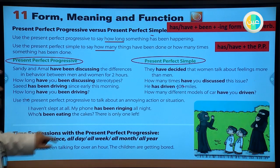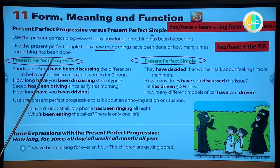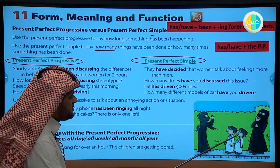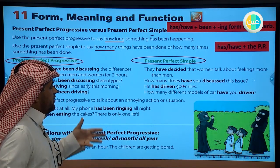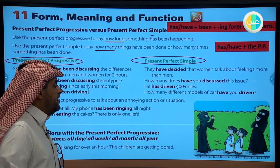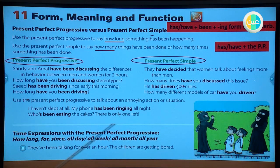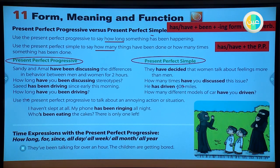Use the present perfect progressive to talk about an annoying action or situation. For example, two women are talking and the boys are bored because the women talked for a long time. We describe this by saying: 'They have been talking for over an hour - the children are getting bored.' This uses the present perfect progressive to express an ongoing, bothersome situation.